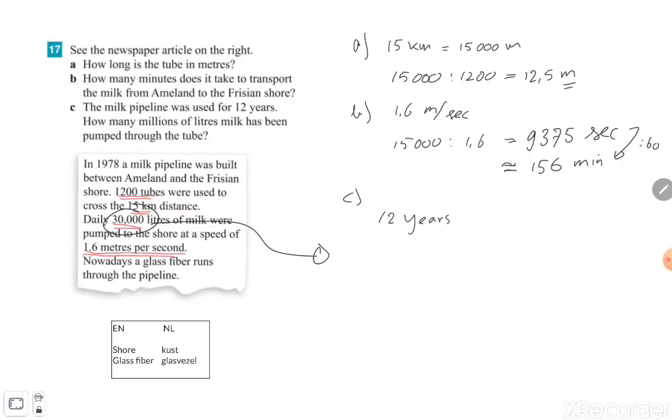Now we know one year has 365 days if we don't talk about leap years. So multiplied by 12, then you know the total days from 12 years, and that's 4,380 days.